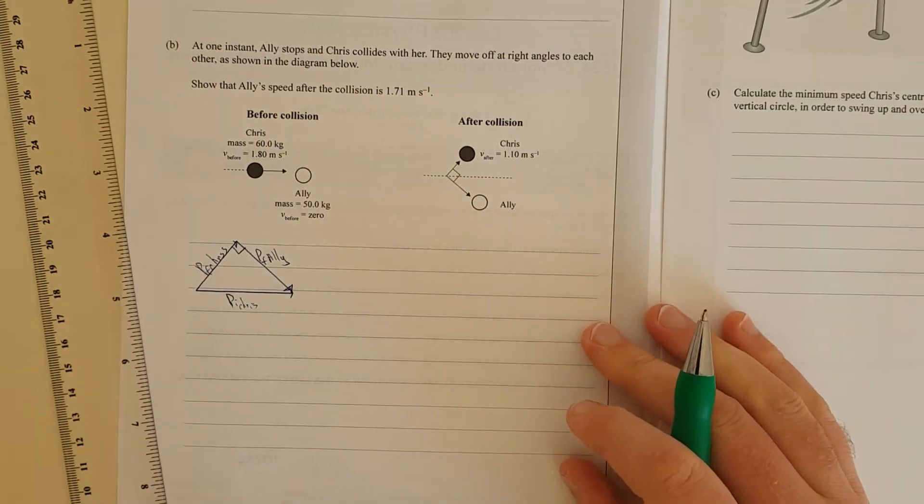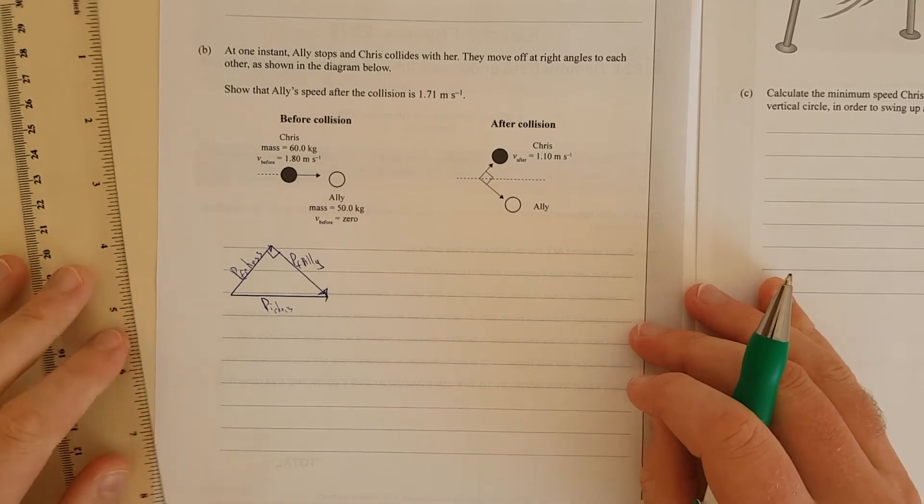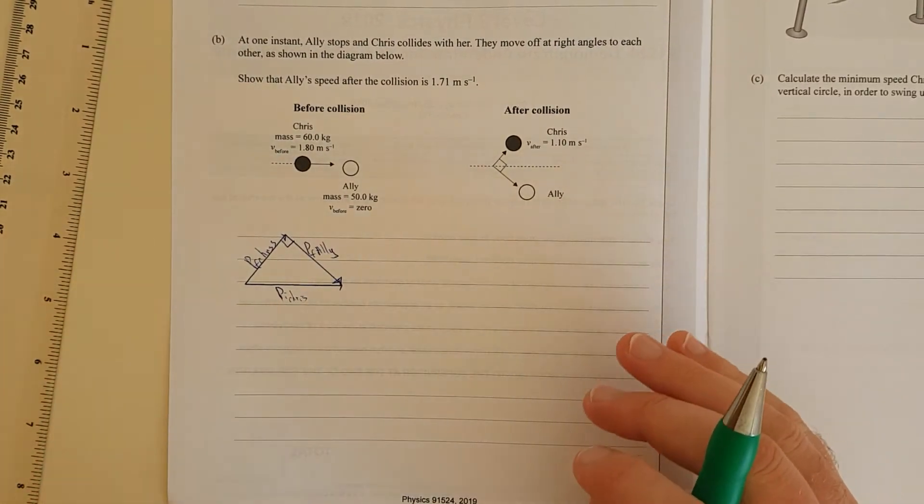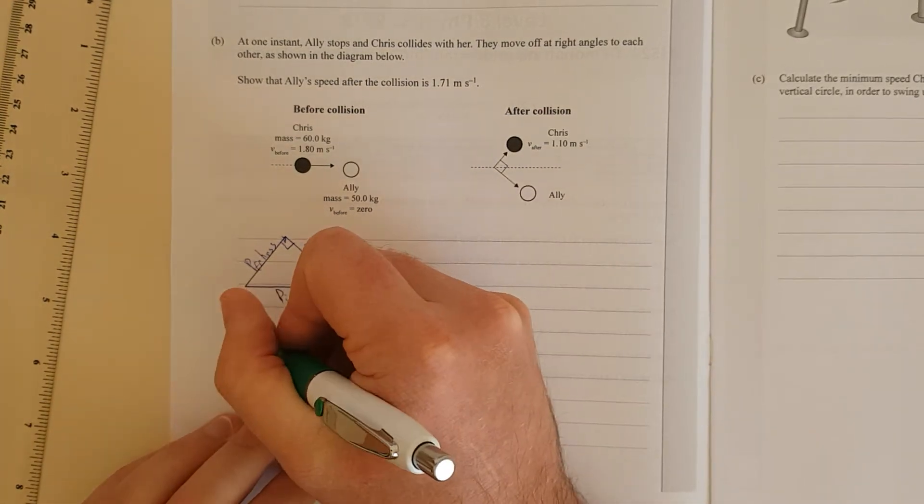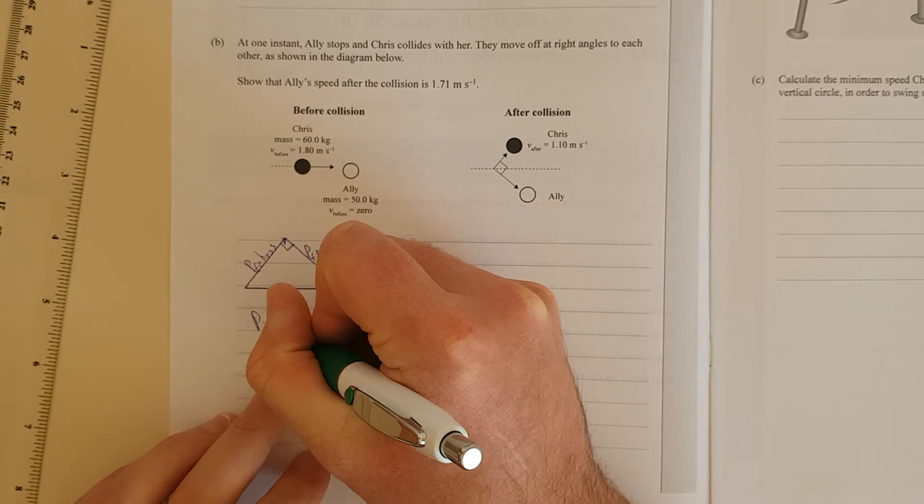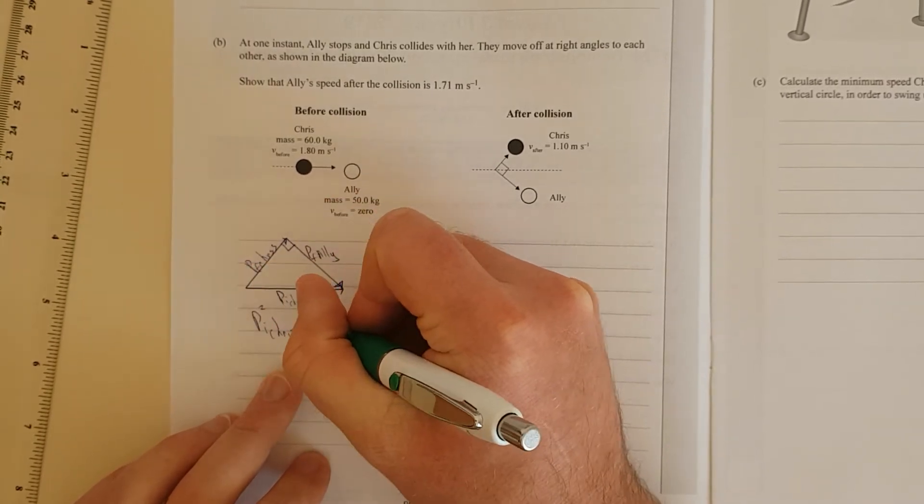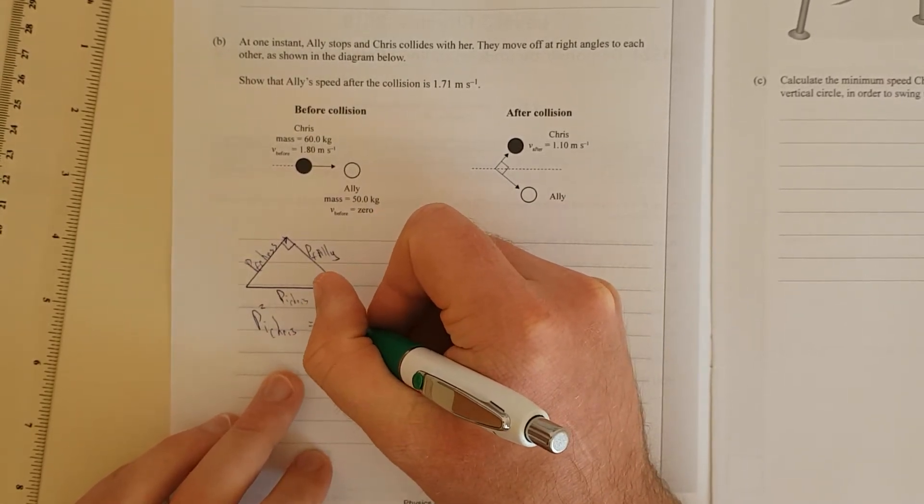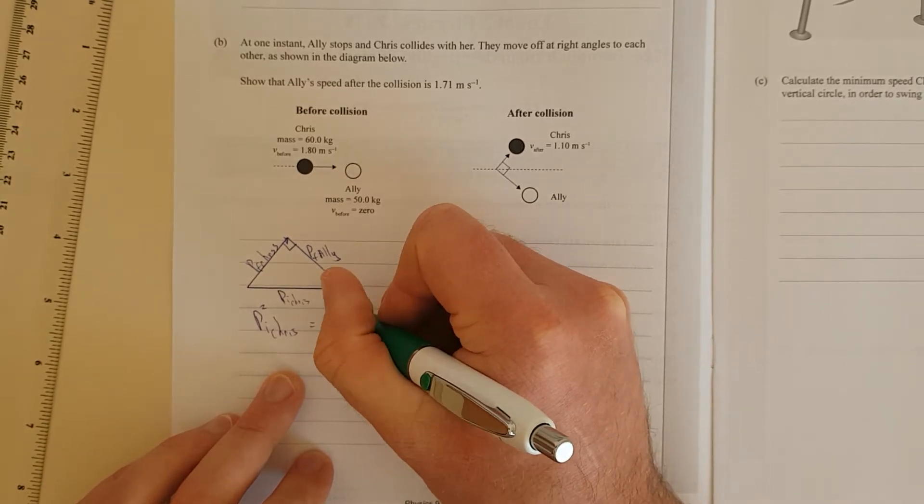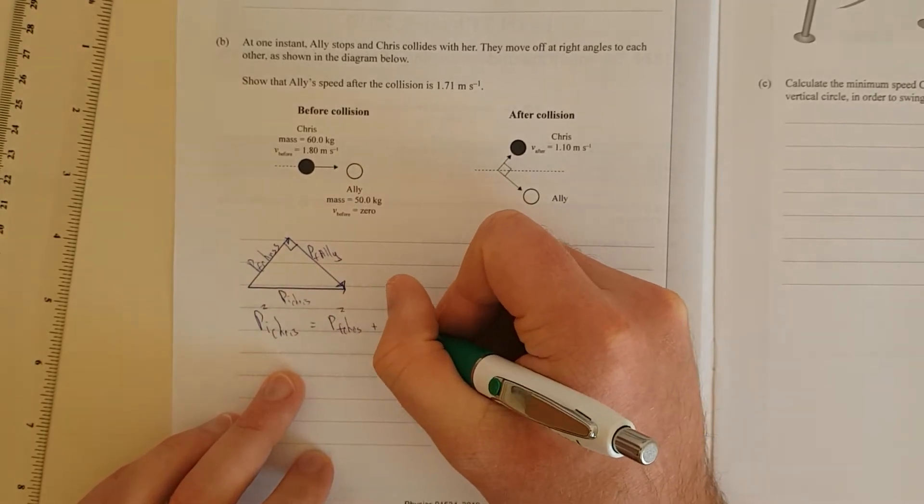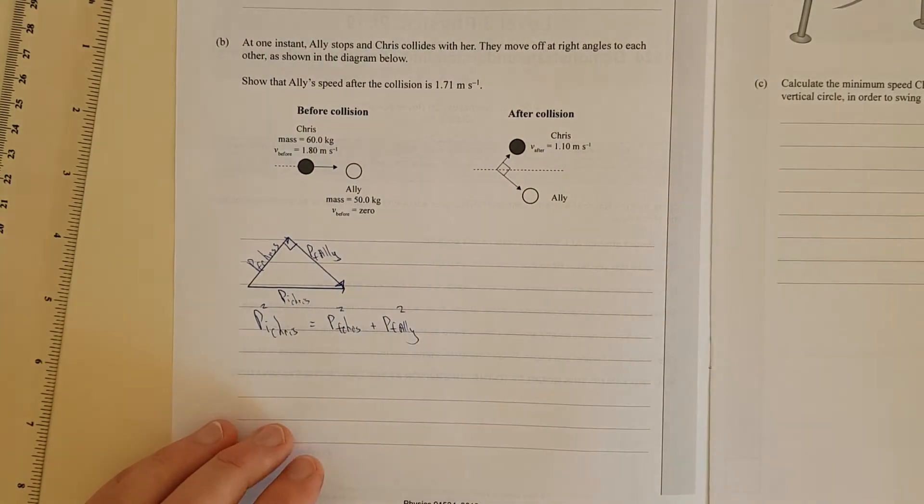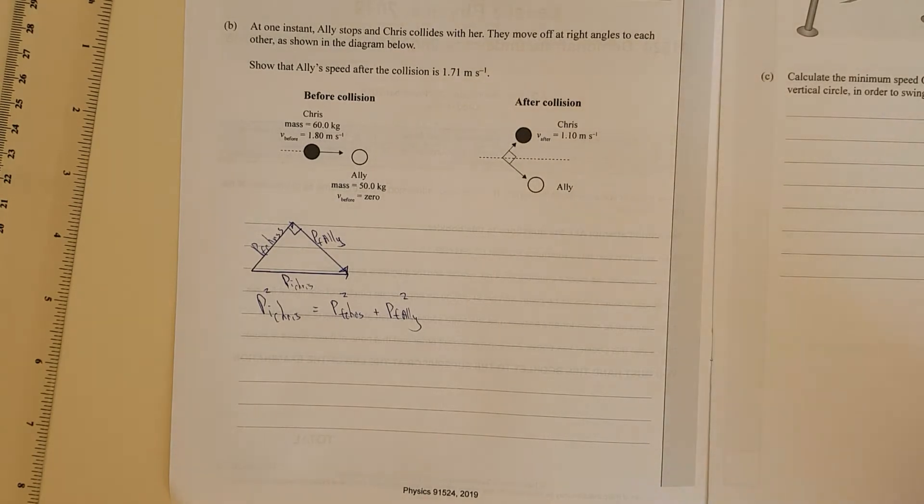They should add together to equal the initial momentum. This is p final of Ali. Remember, p initial of Ali was zero. We can see that we have a right angle triangle, so we'll use Pythagoras. We can say that momentum initial of Chris squared is going to be equal to momentum final of Chris squared plus momentum final of Ali squared.